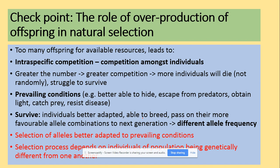Regarding the role of overpopulation in natural selection: if we have too many offspring and not enough resources, this links to intraspecific competition - competition within the same species. A higher number of individuals means higher competition, so more individuals will die or struggle to survive. Those better adapted - for example, better able to hide from predators or obtain food - will survive and pass their alleles to the next generation, increasing the frequency of advantageous characteristics.